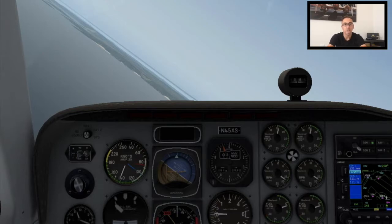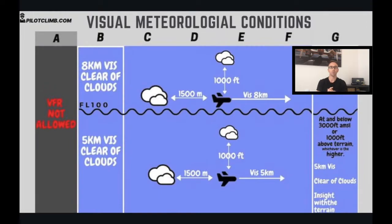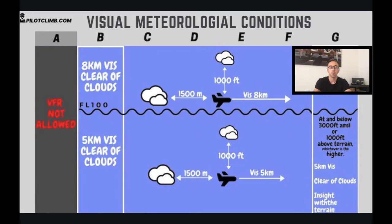When do we know we can fly VFR and when do we have to fly IFR? The boundary between the two is called visual meteorological conditions, or VMC. When we have VMC we can fly VFR, but also if you and the aircraft are certified, you can fly IFR — looking inside and trusting the instrumentation.